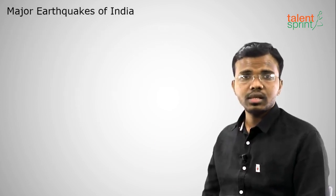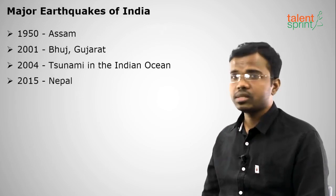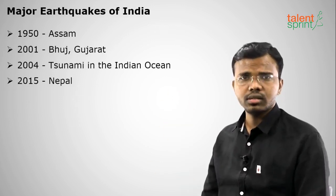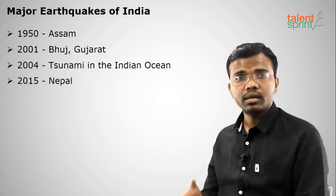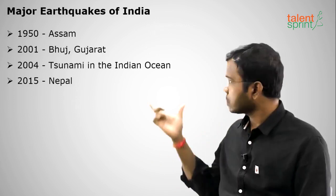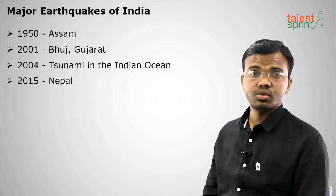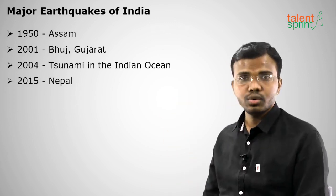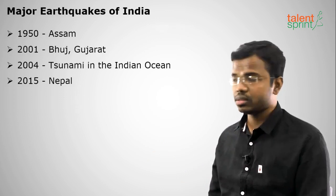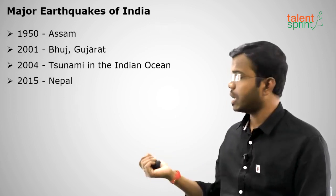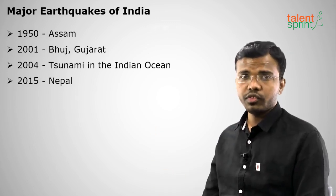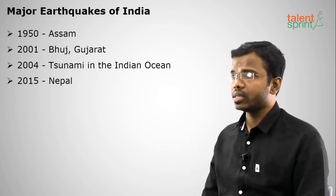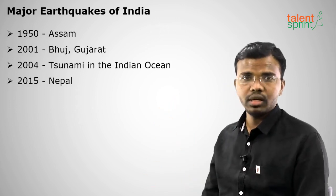There are some major earthquakes in India that happened earlier. The first is the Assam earthquake of 1950, which caused large destruction. Next is the Bhuj earthquake in Gujarat in 2001, which had around 8-plus magnitude on the Richter scale and also caused large destruction. Then there is the 2004 Indian Ocean Tsunami, which we cannot forget — it caused a lot of lives lost in the southern areas and also in Indonesia and Myanmar. And the Nepal earthquake in 2015 — India also experienced tremors because of that, and India helped Nepal in recovery.